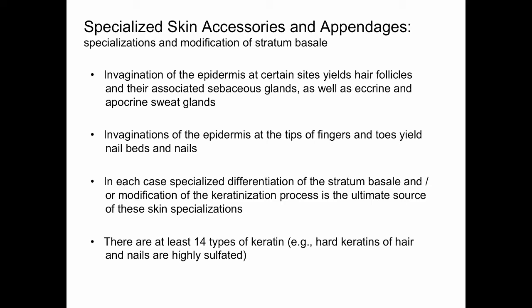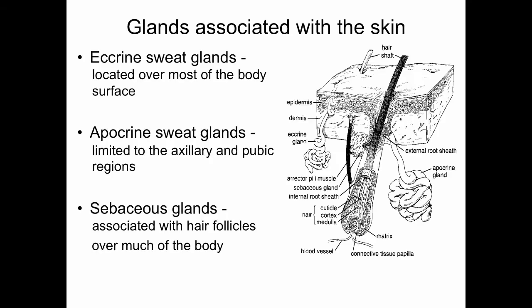Hard keratins are common in the hair and in the nails, and these hard keratins are highly sulfated. There are various glands associated with the skin. This is a diagrammatic view of the skin showing a hair follicle. We can talk about eccrine sweat glands, which are located over most of the surface of the body. Here is an eccrine sweat gland shown diagrammatically.